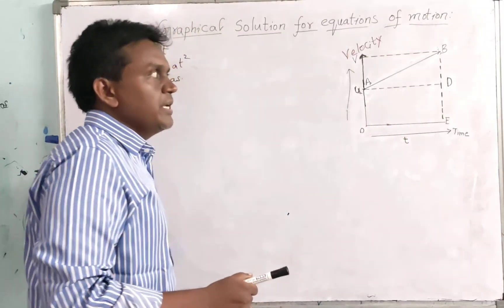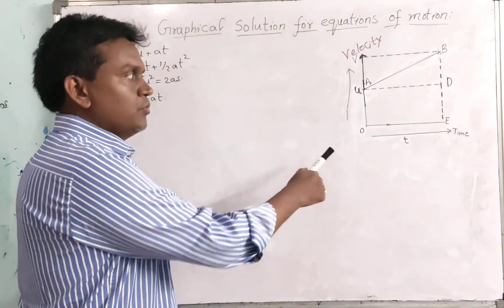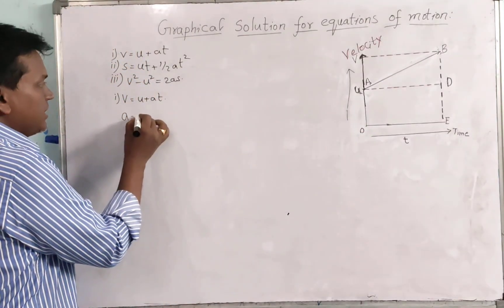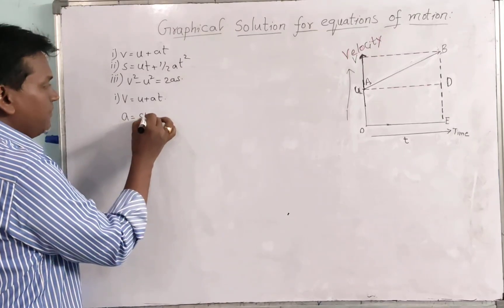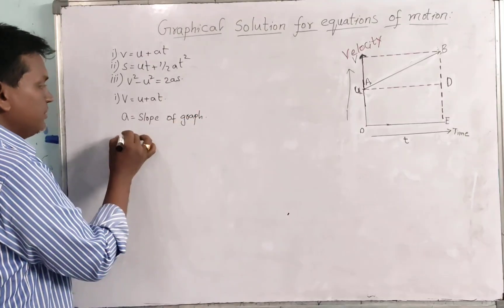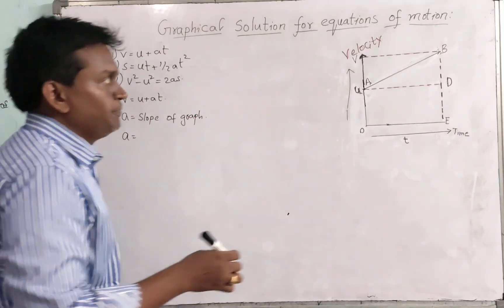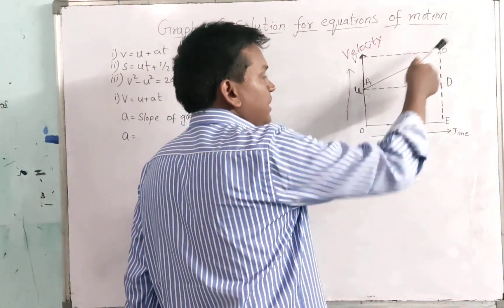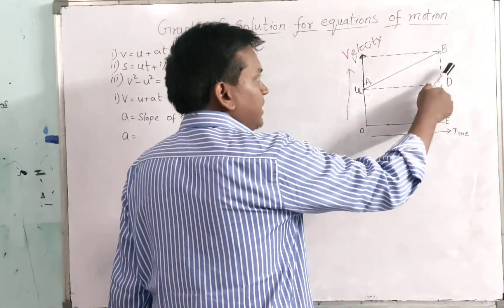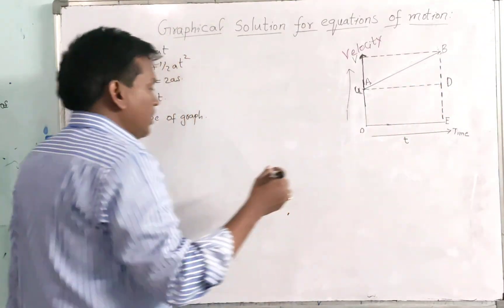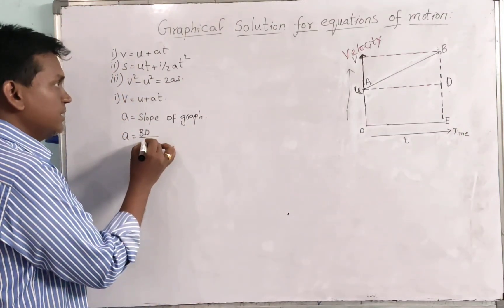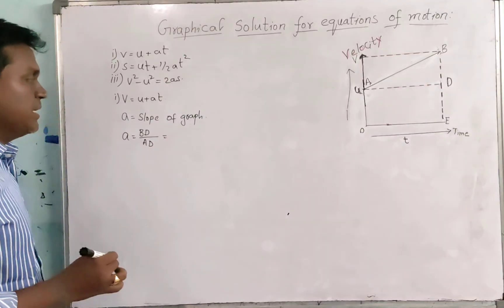AD is equal to OE. Now, if we consider the acceleration, the slope of the graph gives acceleration. The slope is along AB, and considering tan theta, tan theta equals opposite over adjacent side. The opposite side is BD and the adjacent side is AD, so tan theta = BD / AD.